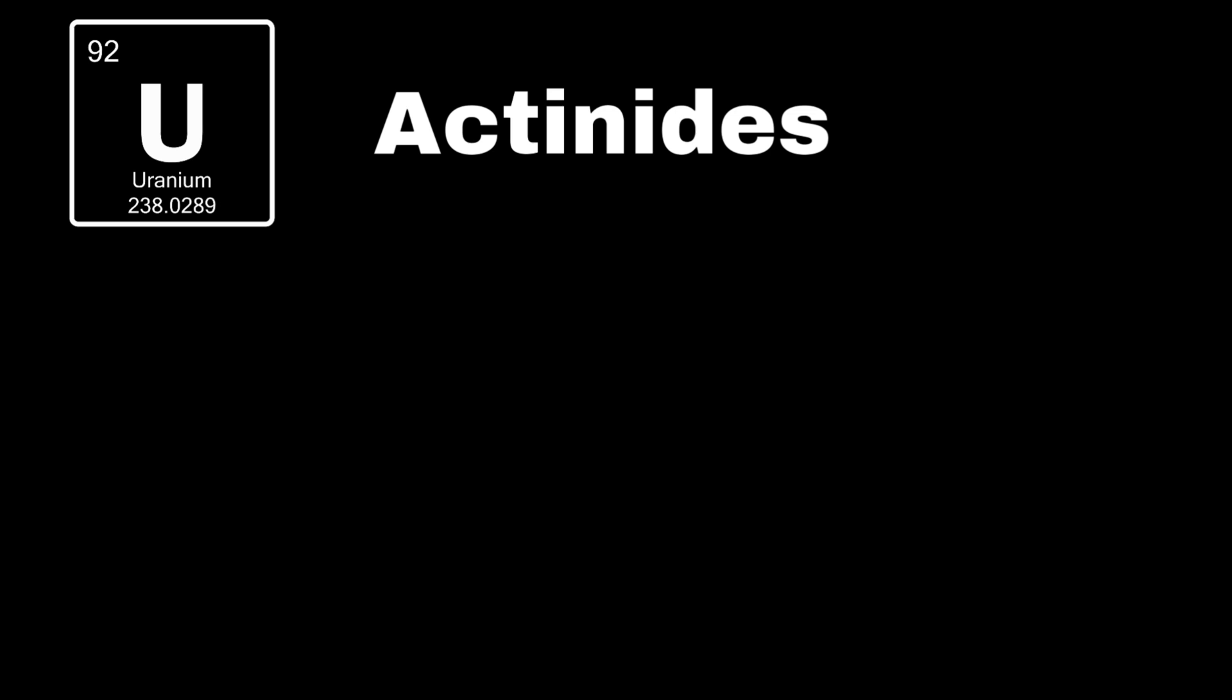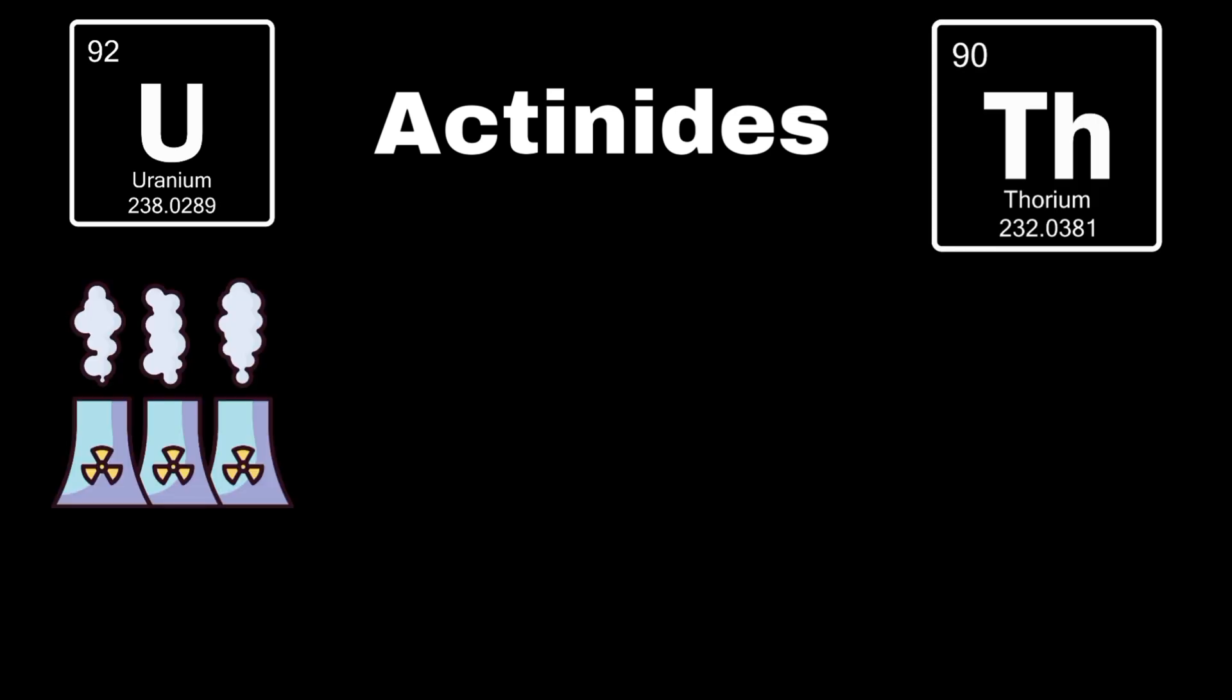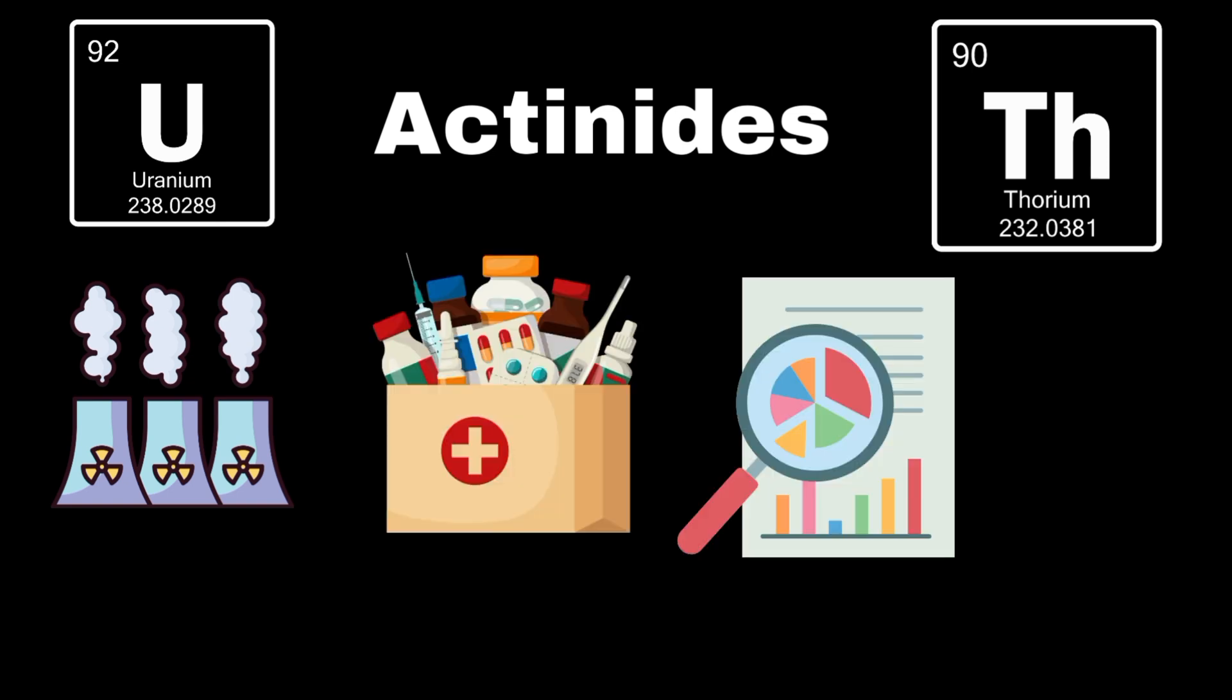Actinides, such as uranium and thorium, are mostly radioactive. Uranium is a critical fuel for nuclear power, while other actinides have roles in medicine and research. Despite their name, many of these elements are more common than gold in the earth's crust.